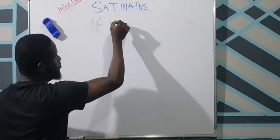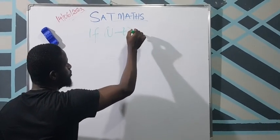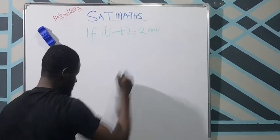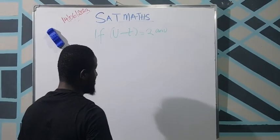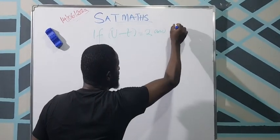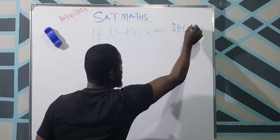If u minus t is equal to 2, and u plus t is 5,